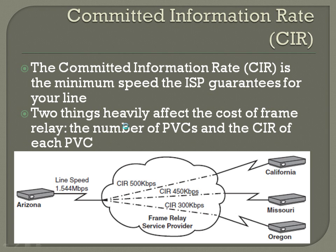Arizona has three PVCs to these routers over here. The actual local access rate, the line speed, is up to 1.544 megabits per second. On each of the PVCs, it's got a committed information rate — 500K here, 450, and 300. You can see that all of those added together do not exceed 1.544 megabits per second.